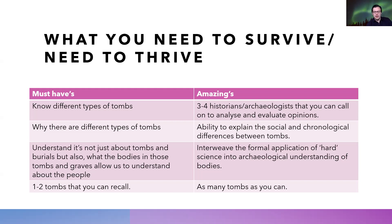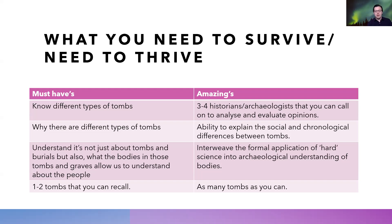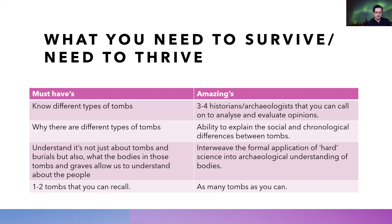If you really want to excel in this subject, you'll need three to four historians or archaeologists you can call on to analyze and evaluate opinions. The 'amazing' approach is: here's the tomb type, here's what a historian or archaeologist says about it, and here's why it's important. You have to explain the social and chronological differences between tombs and interweave the formal application of hard science — biology, chemistry — into archaeological understanding of bodies. You should also be able to talk about as many specific tombs as you can, as the more examples you can give, the more you show what you know.